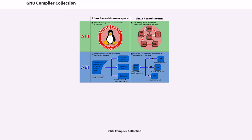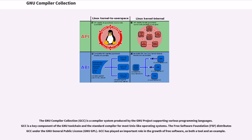The GNU Compiler Collection, GCC, is a compiler system produced by the GNU project supporting various programming languages. GCC is a key component of the GNU toolchain and the standard compiler for most Unix-like operating systems. The Free Software Foundation, FSF, distributes GCC under the GNU General Public License, GNU-GPL. GCC has played an important role in the growth of free software, as both a tool and an example.